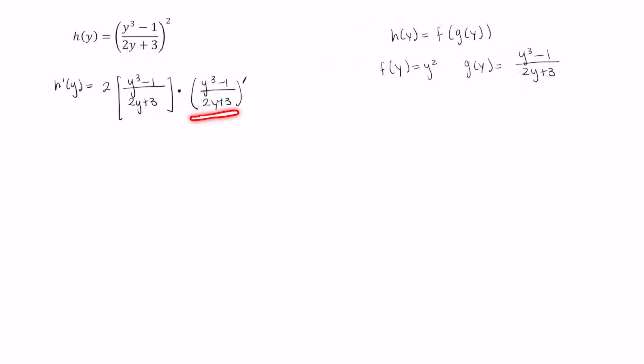So let's actually find this derivative, that is, evaluate this over here on the side. So g prime of y is equal to the derivative of the numerator times the denominator minus the numerator times the derivative of the denominator, and this whole thing divided by 2y plus 3 squared.